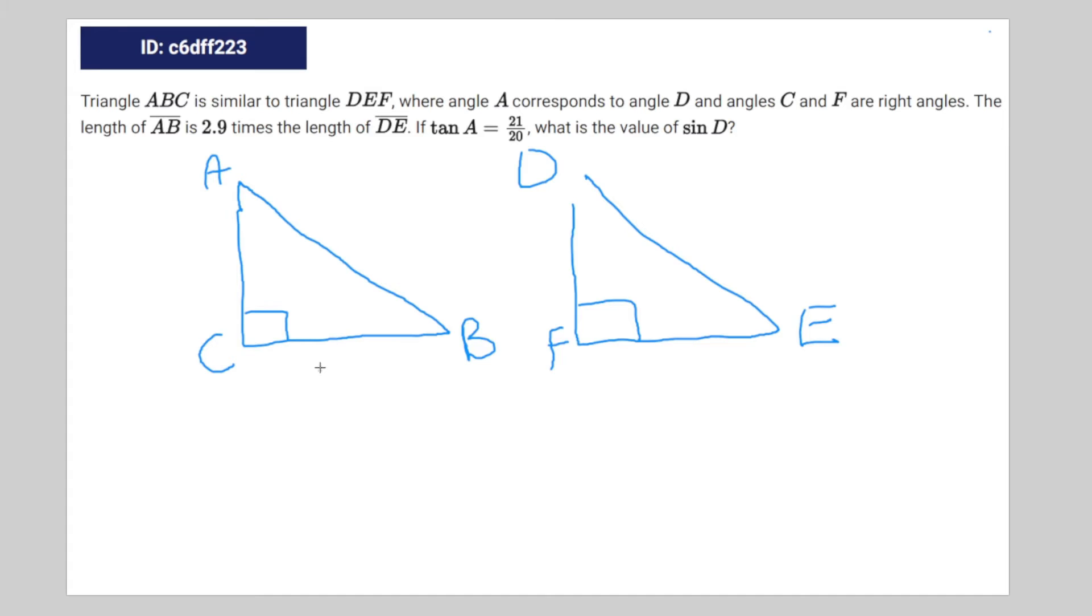Now, CB doesn't literally equal 21. It's just to portray the relationship it shares with AC, in which case AC would be 20. And to find AB,